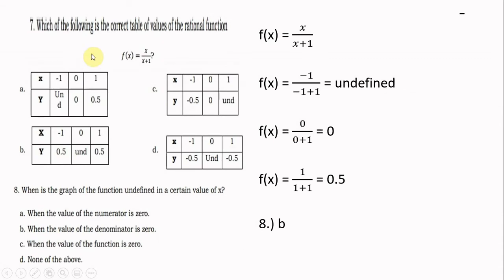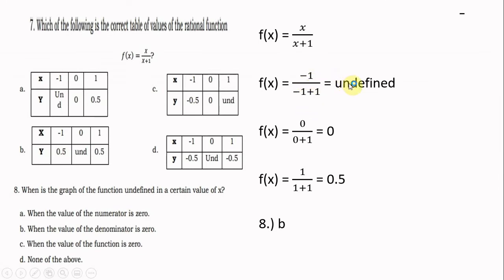Number 7: which is the correct table of values of the rational function f(x) = x over (x plus 1)? All four choices have the independent variable ranging from negative 1 to 1. Substituting x = negative 1 into the function gives an undefined result, and the answer is obviously letter A.